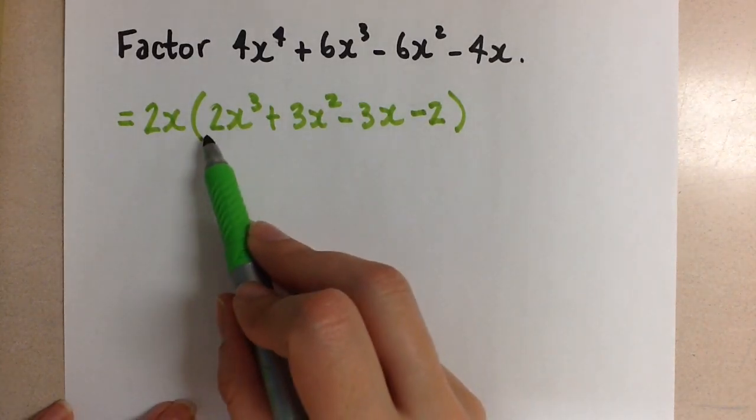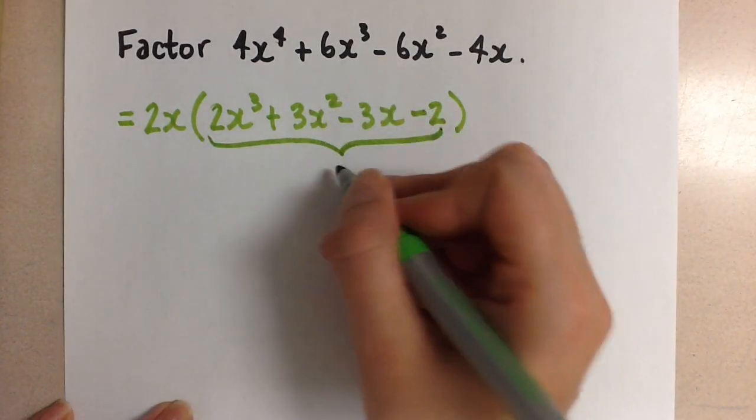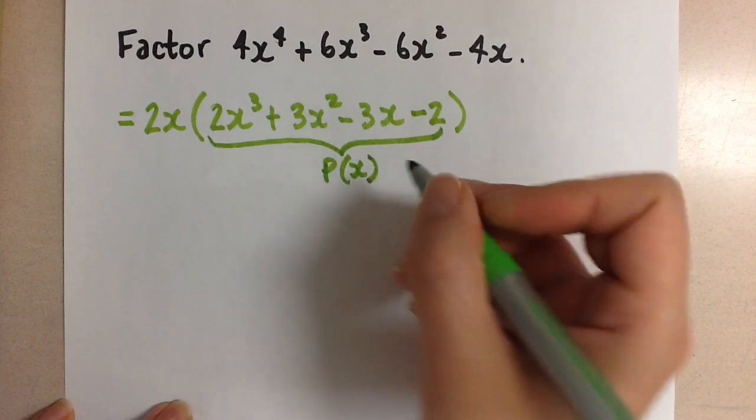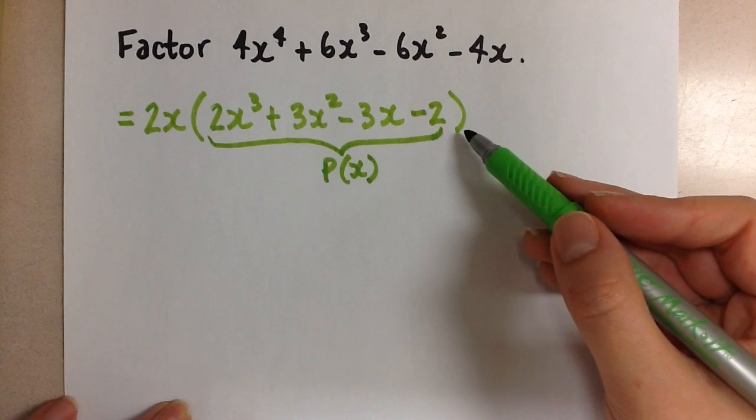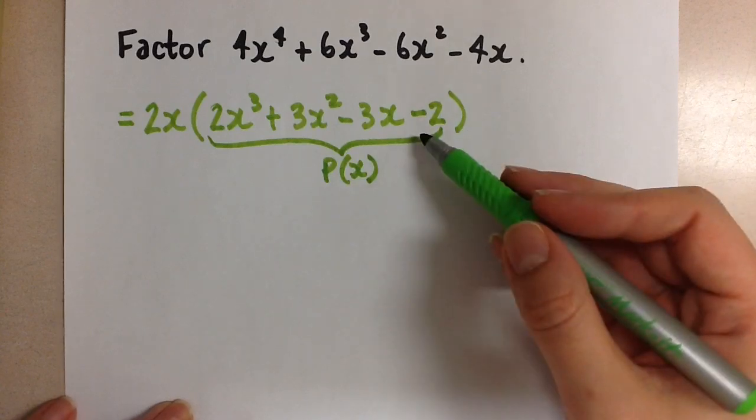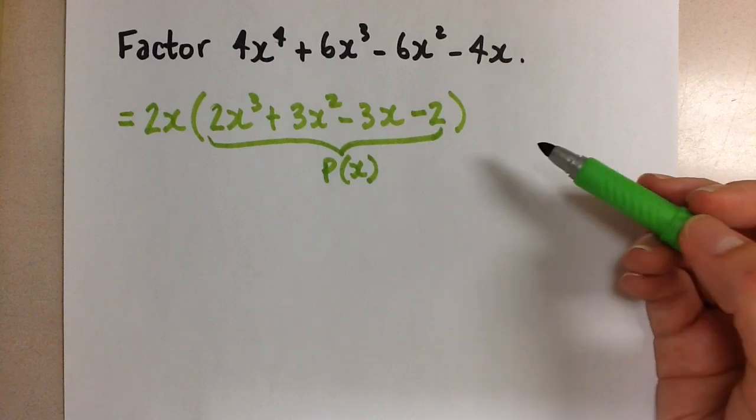Now we're going to concentrate on just this portion in the brackets. We'll call this the new polynomial that we want to factor. So we've reduced it now to a 3 degree polynomial that needs to be factored. Let's call this P at x. In order to factor this, we have to make use of the factor theorem.